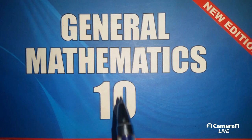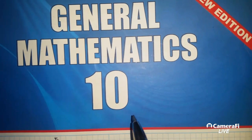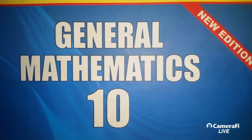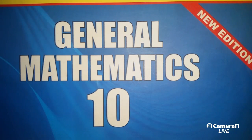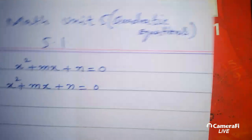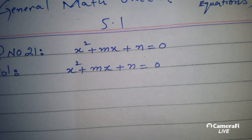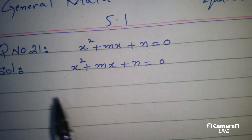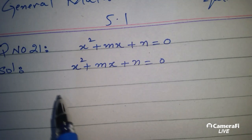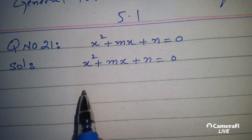Welcome to the Imran Academy. I am discussing with you General Mathematics of 10th Class Punjab, and the chapter we are discussing is Chapter 5 Quadratic Equations and the exercise is Question No. 21: Solve by Completing the Square. We will solve this as a complete method of completing the square.